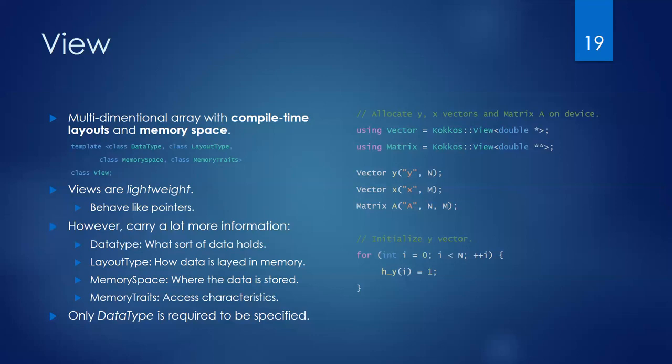Views are general, lightweight, and behave like pointers, but they carry much more information. They know at compile time what sort of data they hold, how data is laid out in memory, where the data is stored — whether on the CPU or GPU — and access characteristics. The good thing with COCOS is that you only need to specify the data type, and sensible defaults can be selected for the rest.